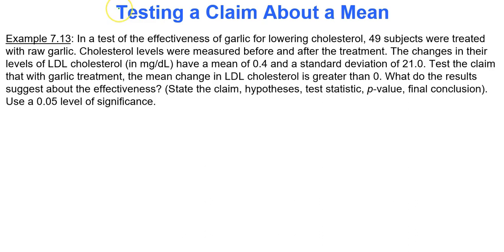Here's an example we did with confidence intervals but now we'll do it with hypothesis testing. In a test of the effectiveness of garlic for lowering cholesterol, 49 subjects were treated with raw garlic. Cholesterol levels were measured before and after treatment, and the changes had a mean of 0.4 and a standard deviation of 21. Test the claim that with garlic treatment the mean change in LDL cholesterol is greater than zero. We'll state the claim, hypotheses, test statistic, p-value, and final conclusion.